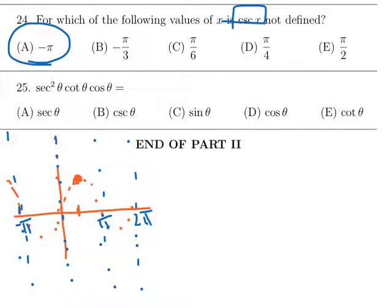And then let's look at 25. For this, hopefully you know all of your trig identities. Let me grab a different color. So secant squared, secant is 1 over cosine. So secant squared is going to be 1 over cosine squared. Now we want times cotangent. We could change cotangent to, what is it, cosine over sine.